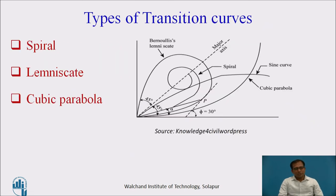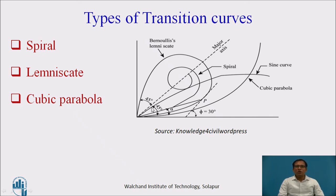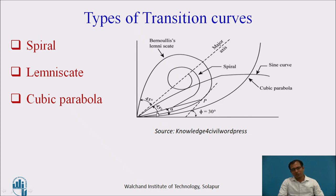We have different types of transition curves: spiral, lemniscate, and cubic parabola. The spiral fulfills all the conditions. For up to 4 degrees, the paths followed by all these curves are the same. But beyond 4 degrees or larger angles, for lemniscate and cubic parabola, the rate of change of radius is not uniform, so the centrifugal acceleration is also not uniform — when the radius starts increasing, the centrifugal acceleration starts decreasing, causing hazardous conditions. So lemniscate and cubic parabola hold good for smaller angles only, but for larger angles the spiral fulfills the ideal condition.